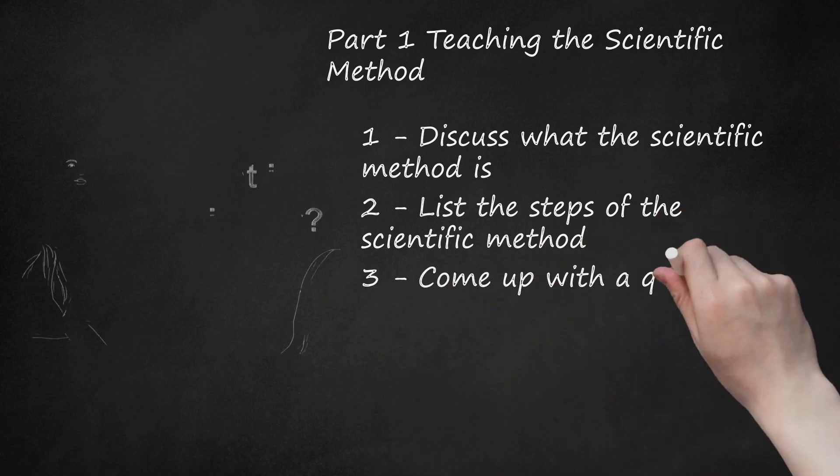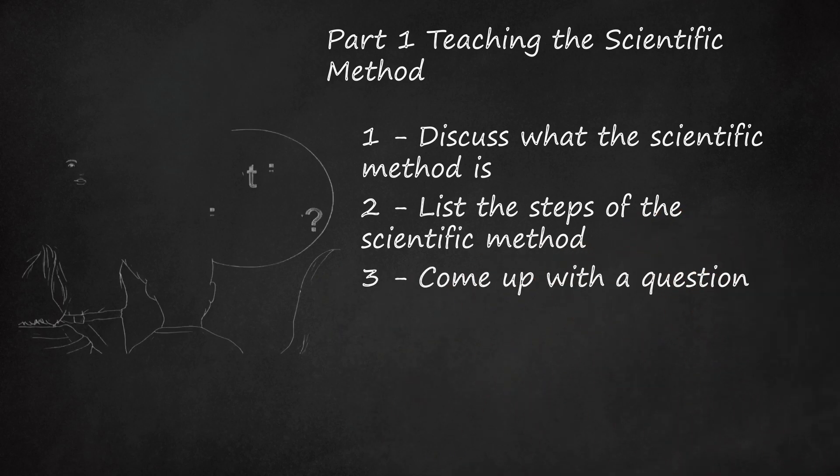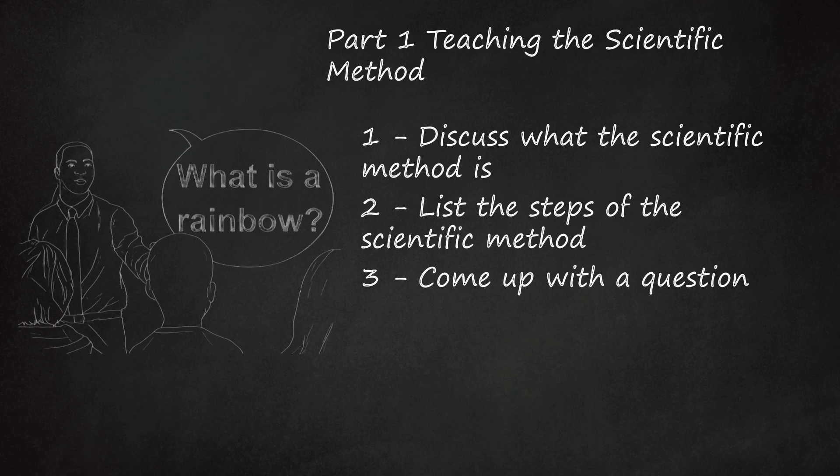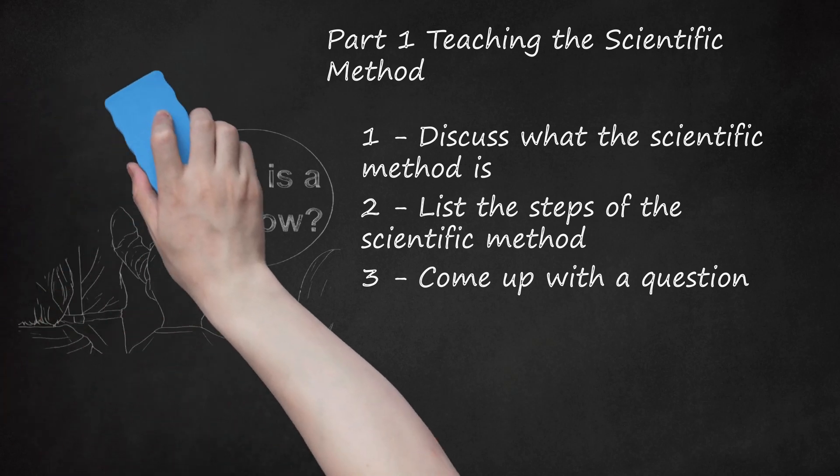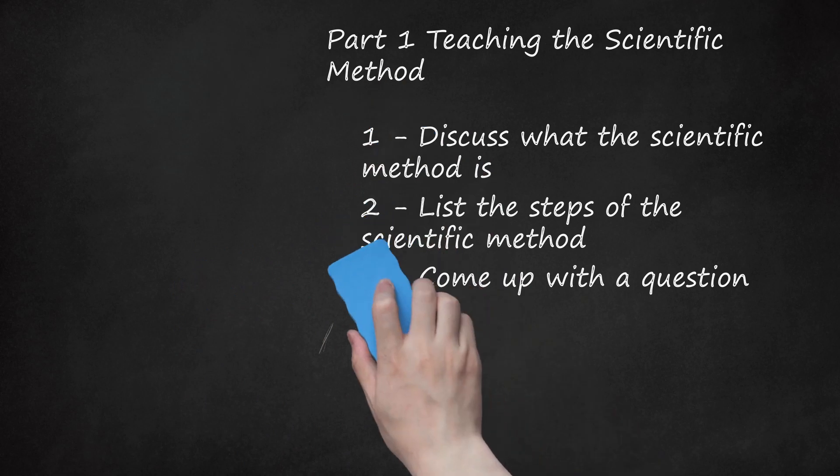3. Come up with a question. The official first step of the scientific method is to ask a question. It can be about anything that you are interested in or about something that you have observed. The best questions are something that can be measured with an experiment, but your question can be as simple as 'What is a rainbow?' Some other example questions: How does the curve of an arch affect how much weight it can hold? How does the purity of water affect its surface tension?